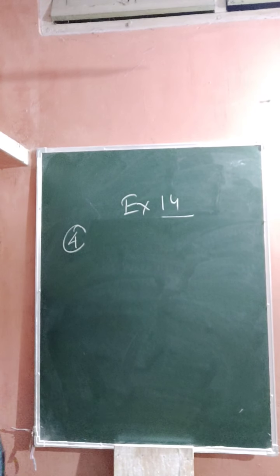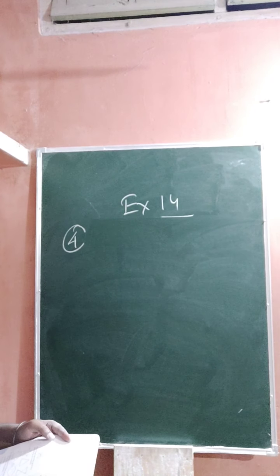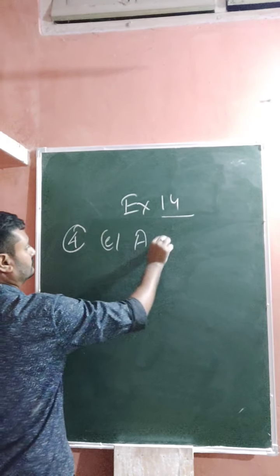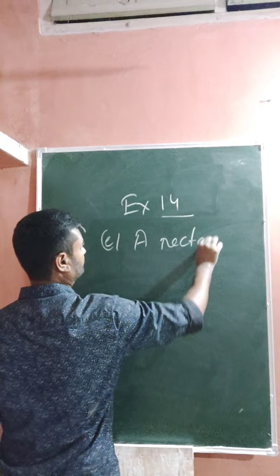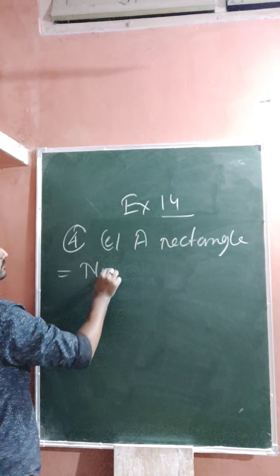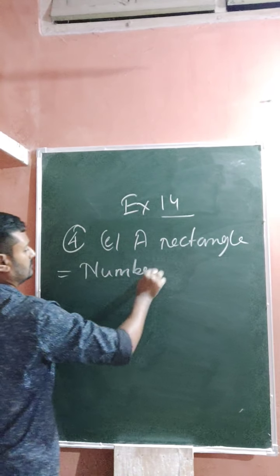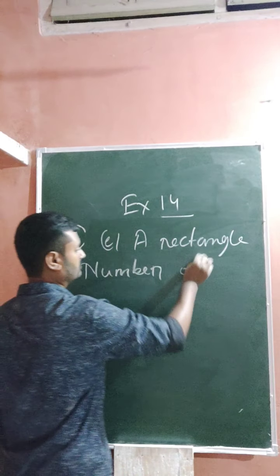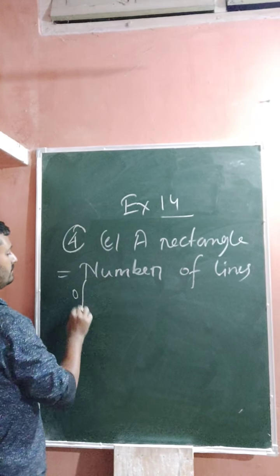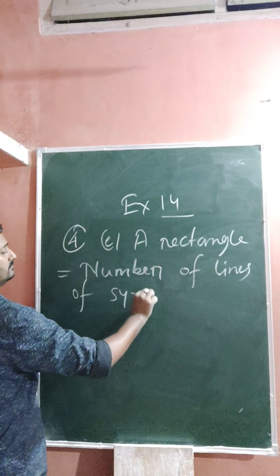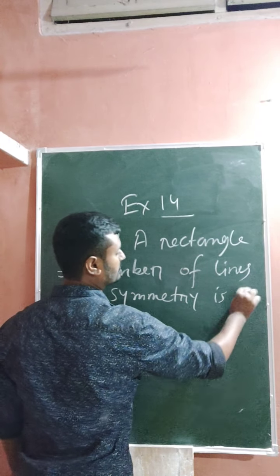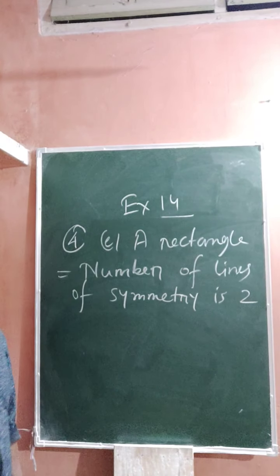The last one is a rectangle. The number of lines of symmetry for a rectangle is two — one horizontal and one vertical.